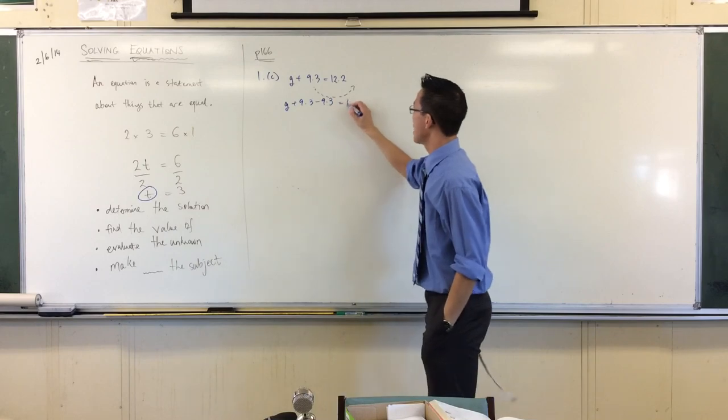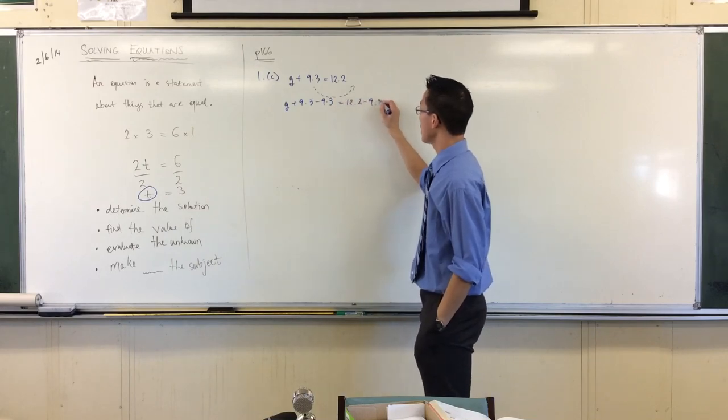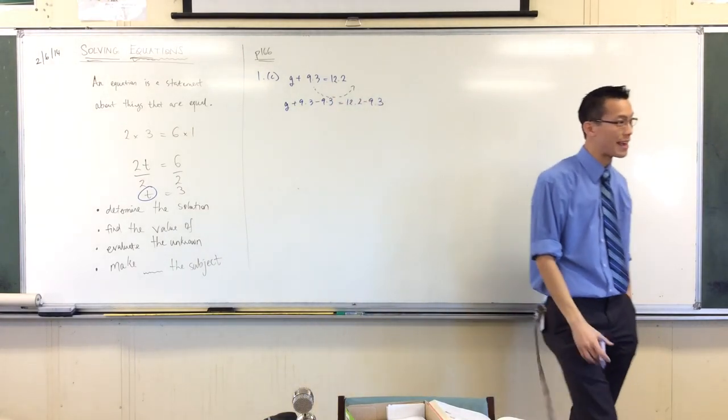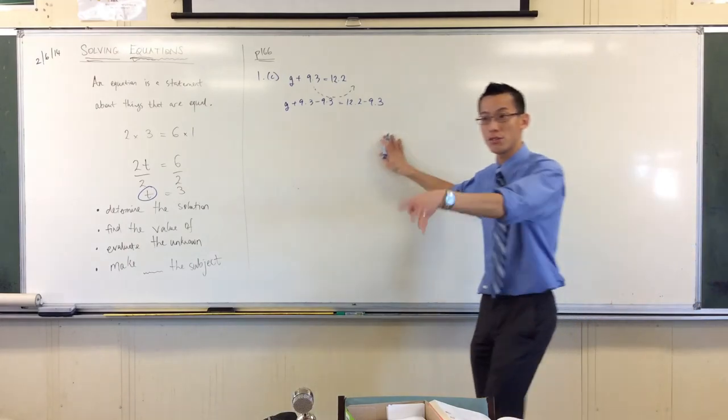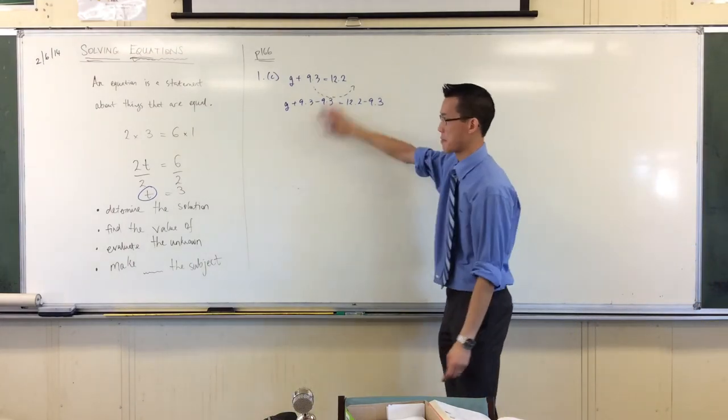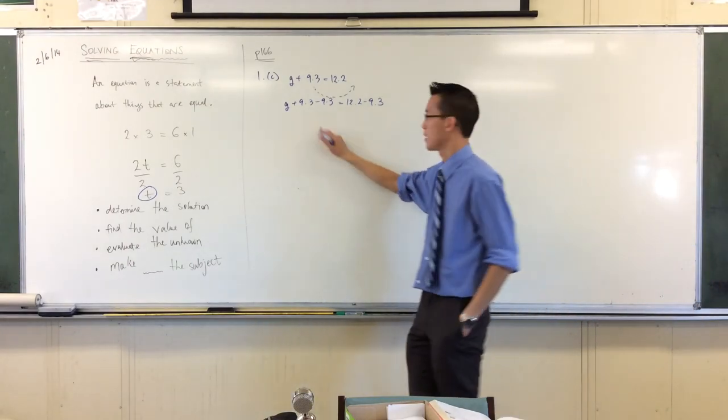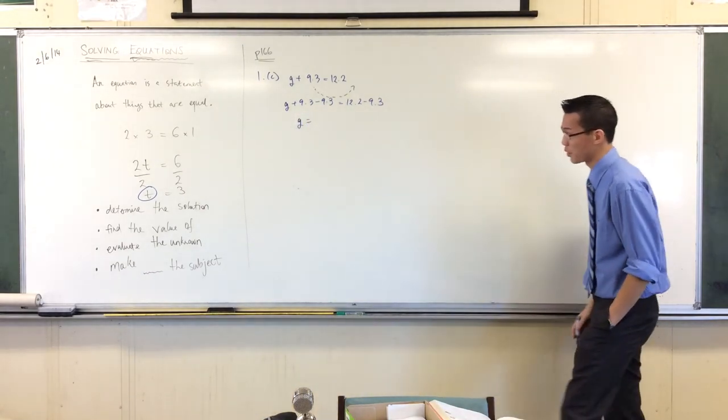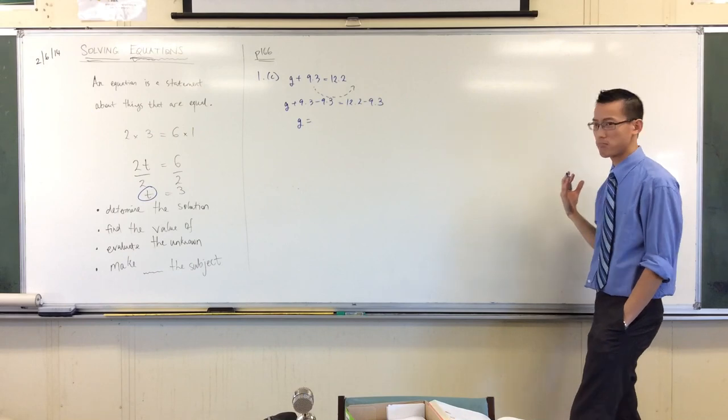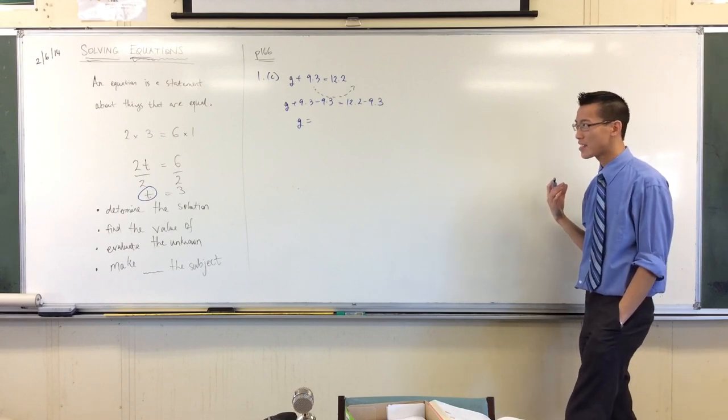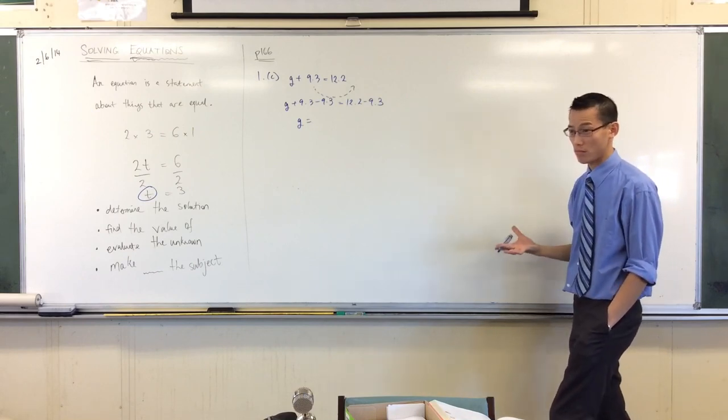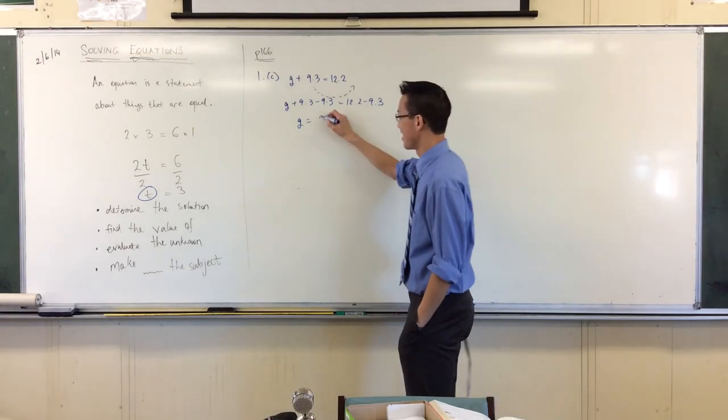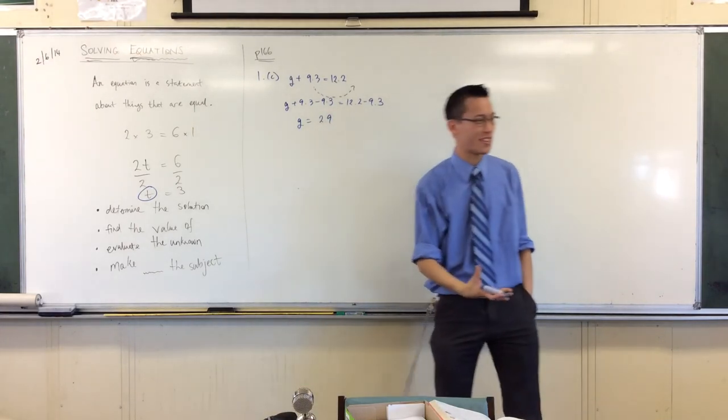Right, now this line I'm just writing right now isn't really necessary. You can go straight there, but I'm including it here for you so you know exactly what I'm doing, so it's not like black magic where did the next line come from. Okay, the 9.3s cancel. 12.2 minus 9.3 is, I think it's 2.9.